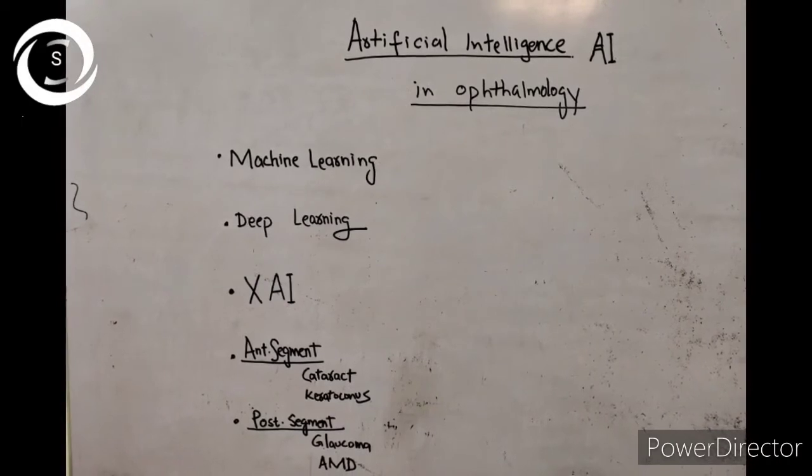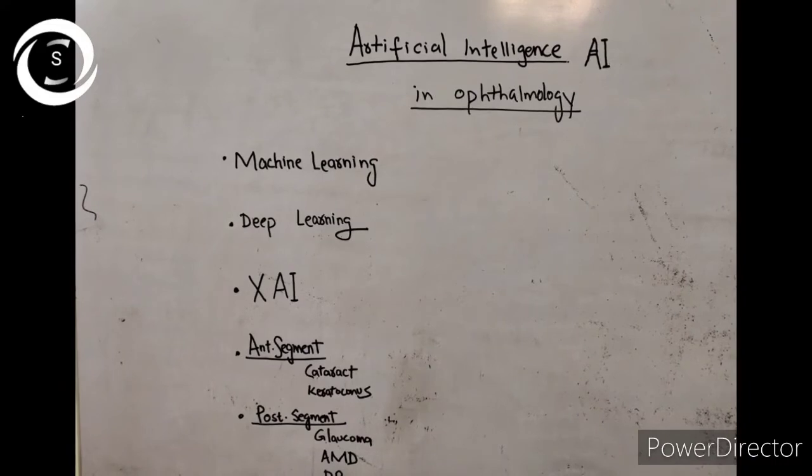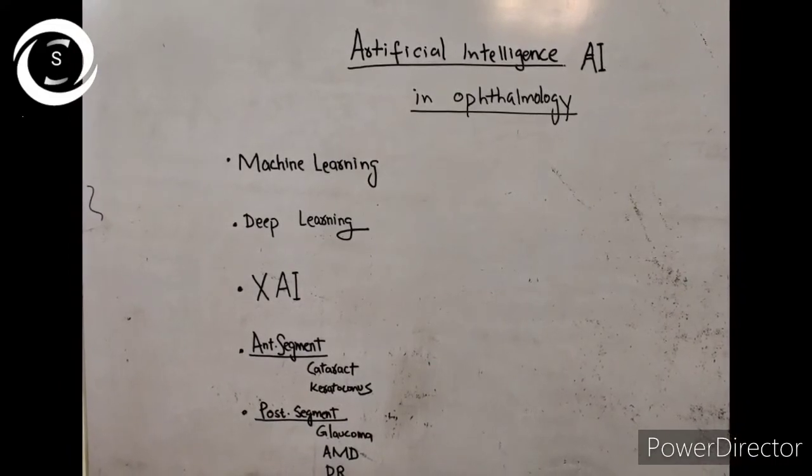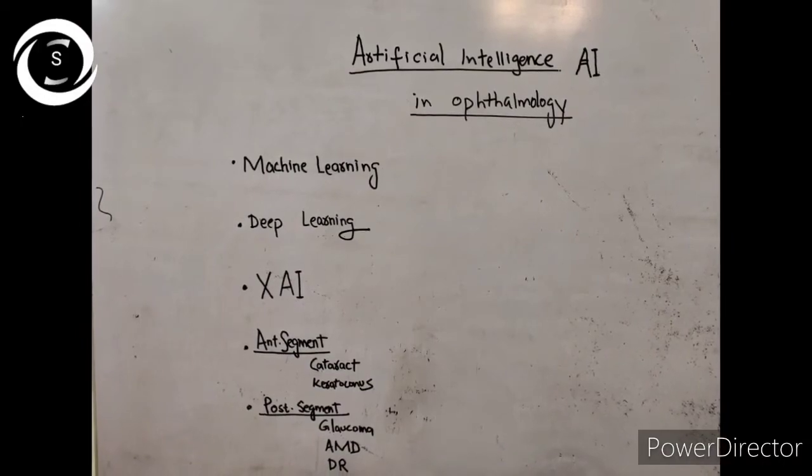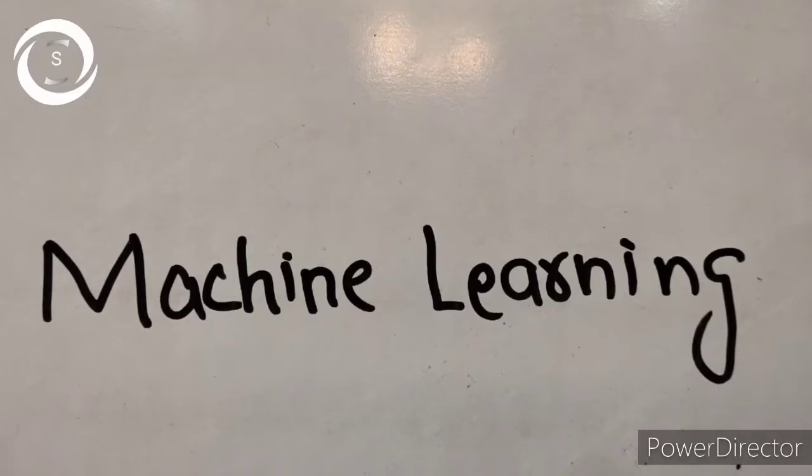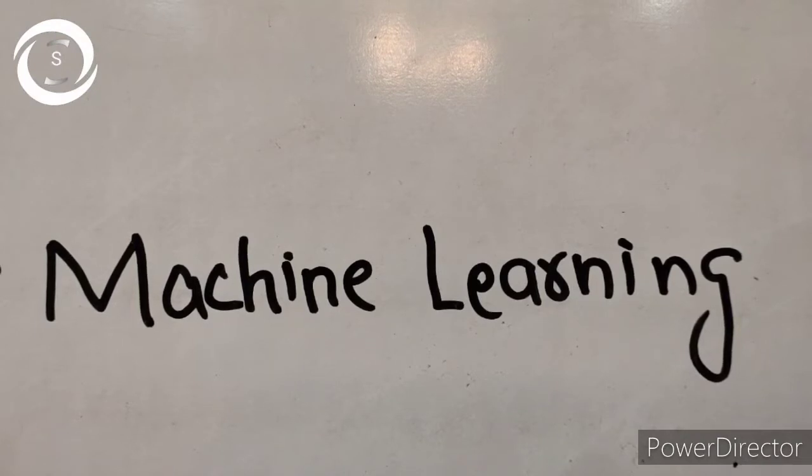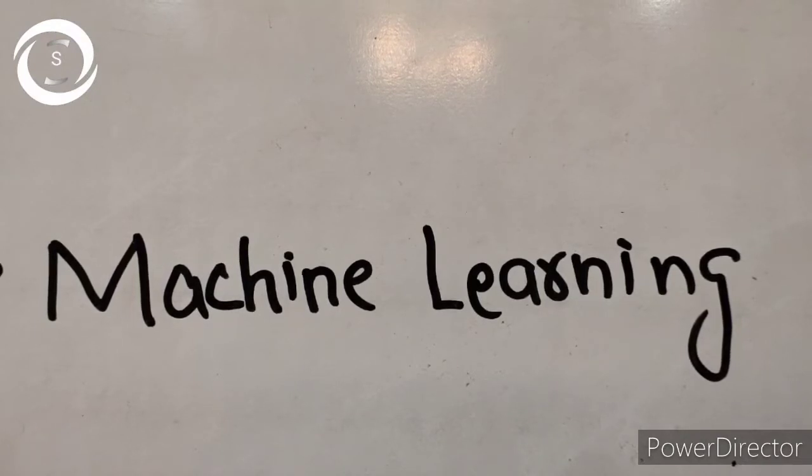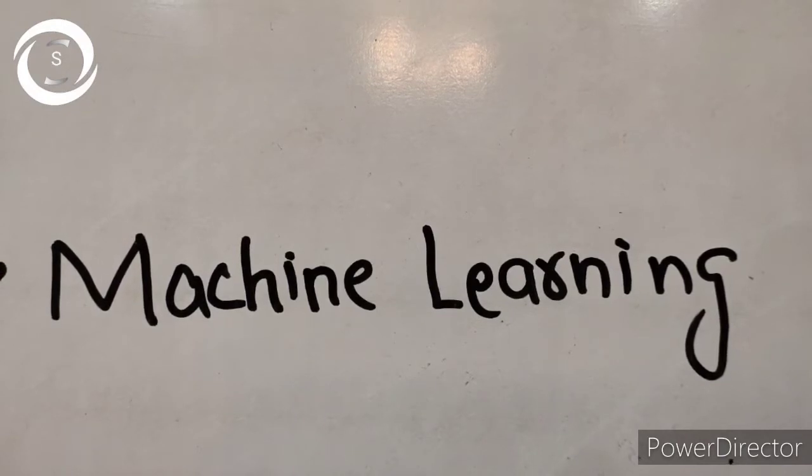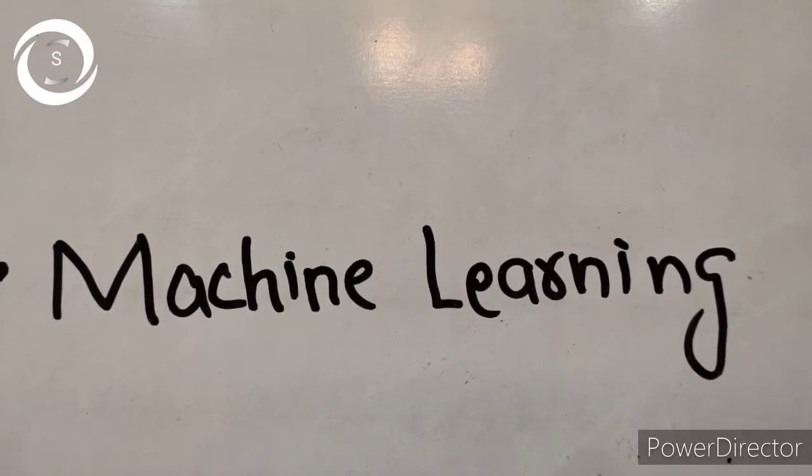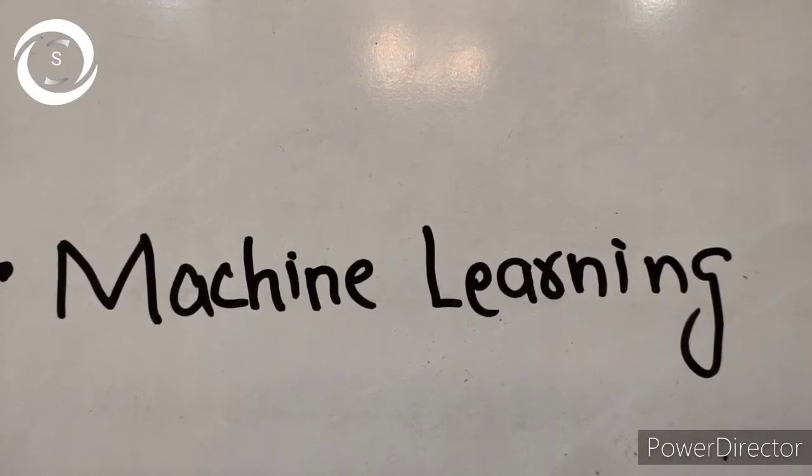Now let's come to our topic: the role of artificial intelligence in ophthalmology. Artificial intelligence first developed its subfield called machine learning or ML. It focused on the learning feature of intelligence and copies the neural structure of the human brain by creating artificial neural networks (ANNs), which is a network of units called artificial neurons organized into layers.